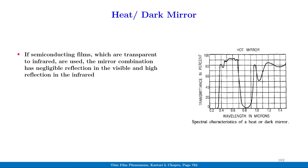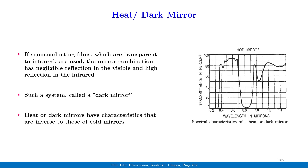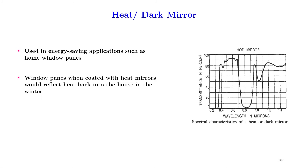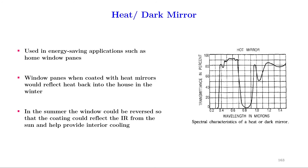If semiconducting films which are transparent to infrared are used, the mirror combination has negligible reflection in the visible and high reflection in the infrared. Such a system is called a heat mirror or a dark mirror. Heat or dark mirrors have characteristics that are inverse to those of cold mirrors and are used in energy saving applications such as home window panes. Window panes coated with heat mirrors would reflect heat back into the house in winter. In summer, the window could be reversed so that the coating could reflect the IR from the sun and help provide interior cooling.